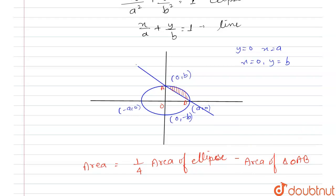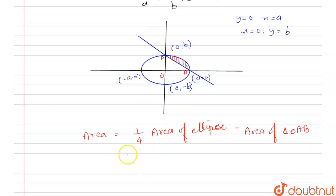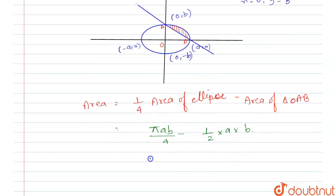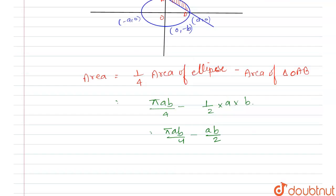The area of the ellipse is πab, so we have πab/4 minus ab/2. Taking ab/4 as a common factor, the remaining expression is π - 2. So the final answer is ab(π - 2)/4.